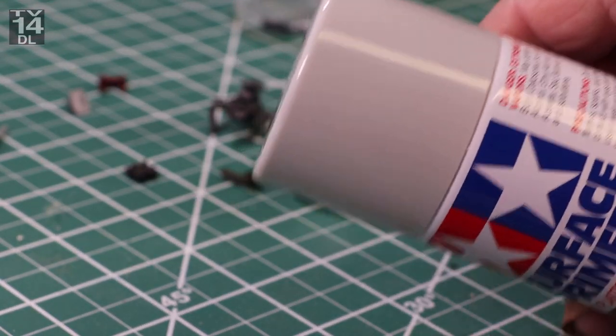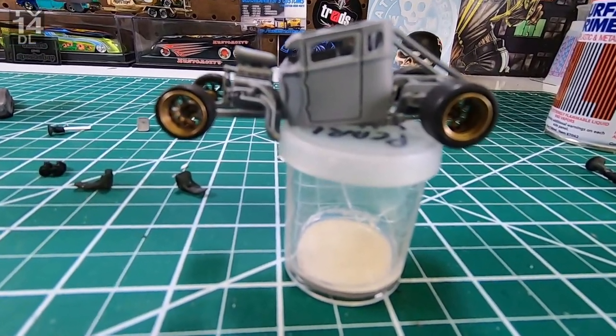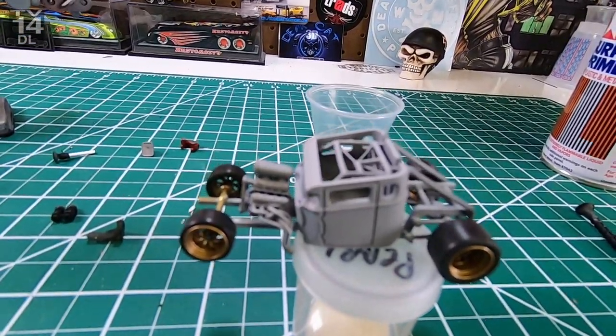So, but here's my Tamiya Fine Gray Primer, which I love this stuff. And this is what it looks like. This is all mocked up. You see what I'm talking about with the cab?